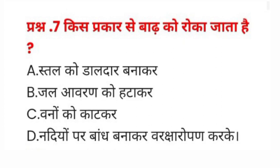Question number seven: किस प्रकार से बाढ़ को रोका जाता है? A) अस्थल को ढालदार बनाकर, B) जल आवरण को हटाकर, C) वनों को काटकर, D) नदियों पर बांध बनाकर। इसका सही जवाब D होगा।